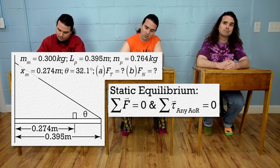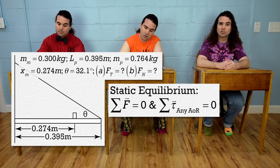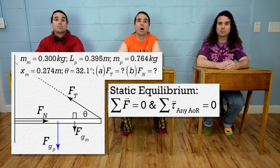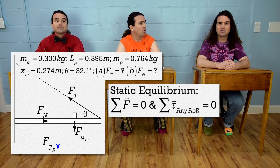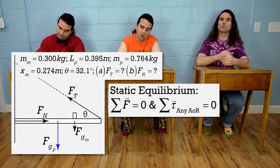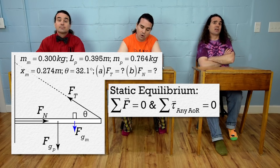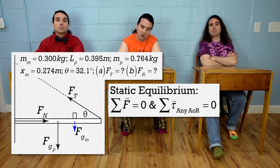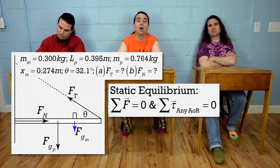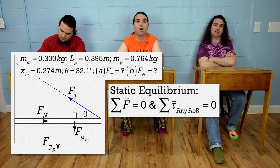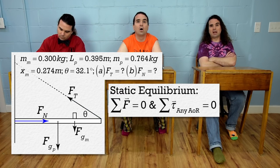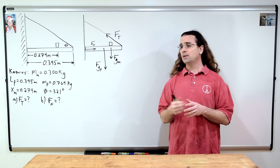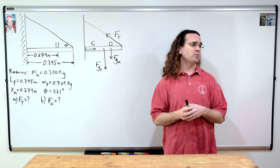That is correct, Bo. Could you please give us that free body diagram? Sure. There is a force of gravity acting on the plank at its center of mass. There is also a force of gravity acting on the mass, which then acts on the wooden plank right where the mass is. The string causes a force of tension on the plank where it attaches and in the direction of the string. Clearly, there is also a force normal acting to the right where the plank pushes against the wall. Thanks, Bo. Billy, please solve the problem from here.